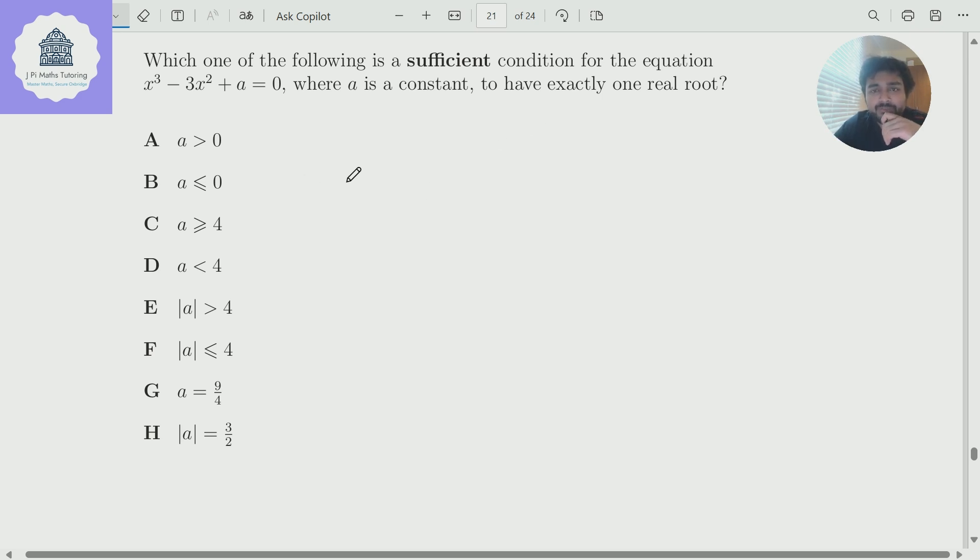Let's have a look. Which one of the following is a sufficient condition for the equation x cubed minus 3x squared plus a equals zero, where a is a constant, to have exactly one real root?